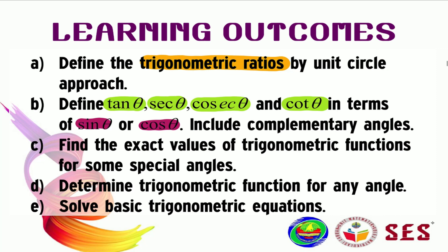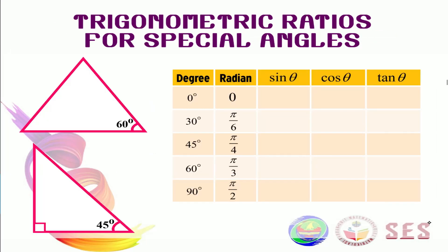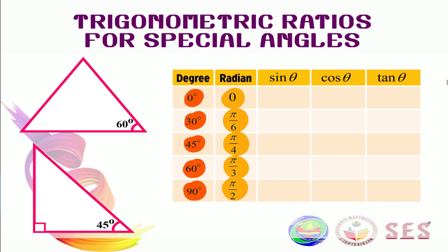The third objective for subtopic 5.2 is to find the exact values of trigonometric functions for some special angles. Of all the angles, there are several angles that have exact ratios: 0 degrees, 30 degrees, 45 degrees, 60 degrees, and 90 degrees. These are their respective values in radian. We are going to talk about radian in our next video, so don't worry about it yet.